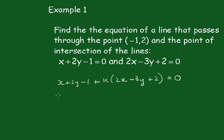So putting in -1 for x, we get -1, and putting in 2 for y, we get +4, -1, plus K into -2, -6, +2 equals 0.